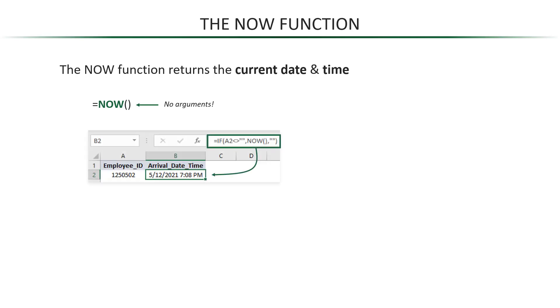So what we could do is write a formula like this one, where as an employee enters his ID and the field stops being blank — in this case A2 — then the NOW function will return the date and time in cell B2.